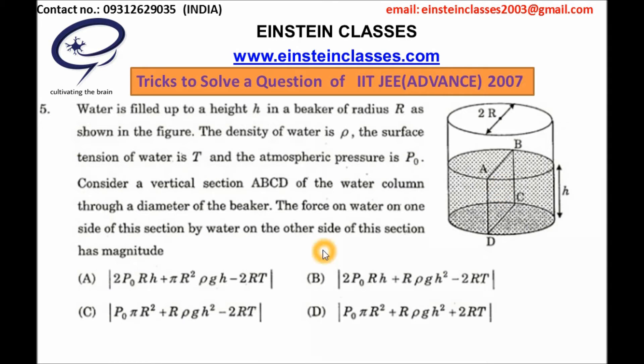That means options C and D will be eliminated, and options A and B will be the correct possible answers because in both options, the force exerted by the atmospheric pressure P note will be 2P note into RH.